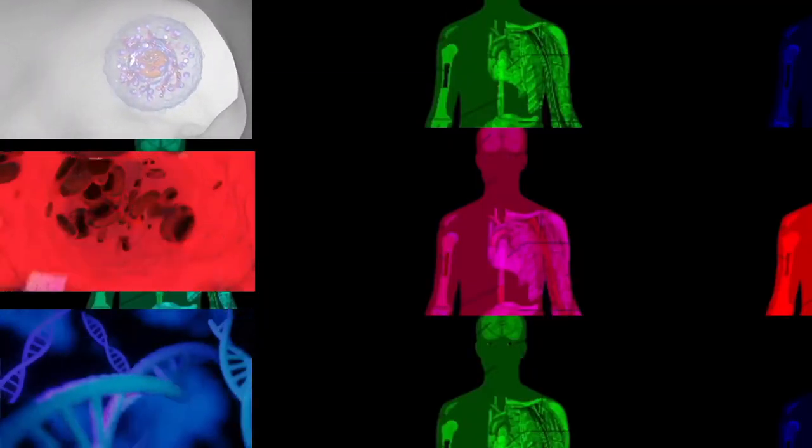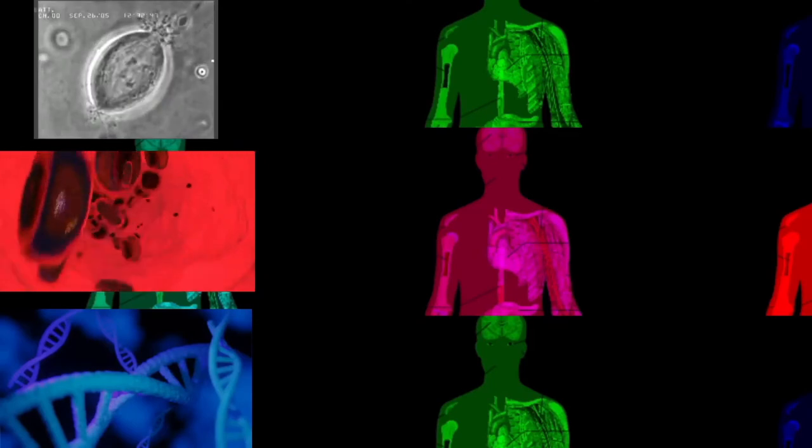Eukaryotes can reproduce both asexually through mitosis and sexually through meiosis and gamete fusion. In mitosis, one cell divides to produce two genetically identical cells.